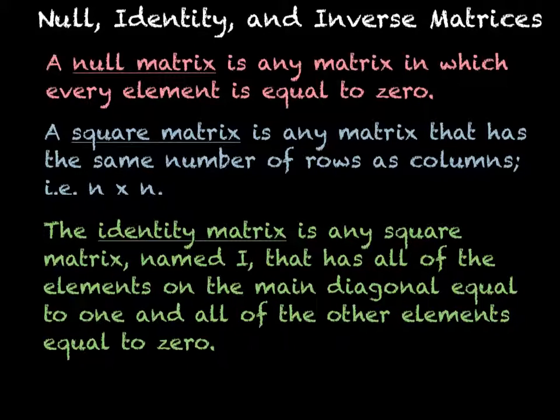The identity matrix is any square matrix, and we call it I, that has all of the elements on the main diagonal equal to 1 and all of the other elements equal to 0.